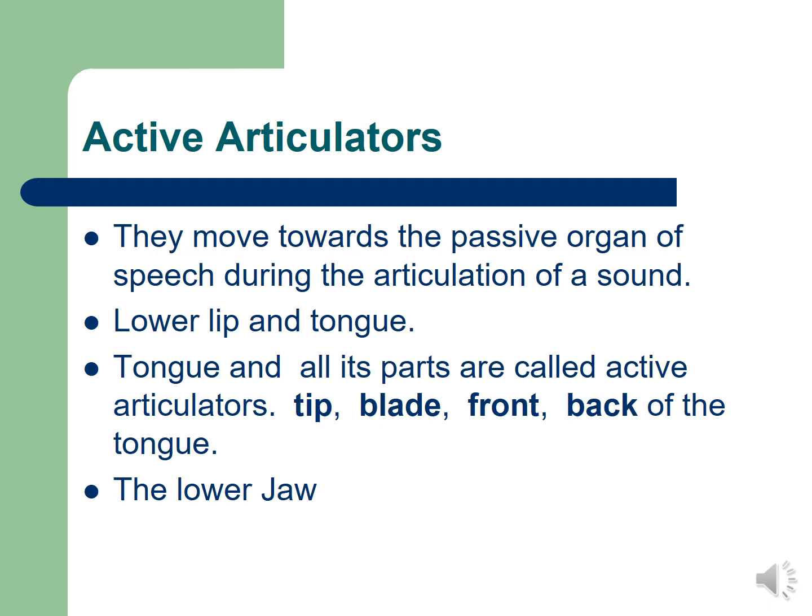The tongue and all its parts are called active articulators — like the tip of the tongue, the blade of the tongue, the front, and the back of the tongue. All of these parts are called active because they are movable; they have this freedom of movement and flexibility. We also have the lower jaw as an active articulator.